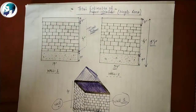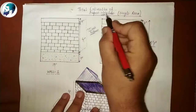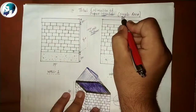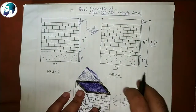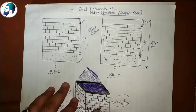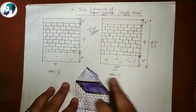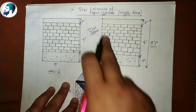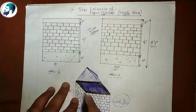As-salamu alaykum everyone. Today we will talk about the total estimation of superstructure. This is a single rectangular room. We will find the estimation for superstructure. Above the ground, we call it superstructure. If it is below the ground, we call it substructure.